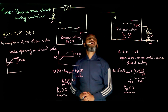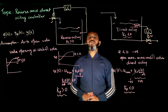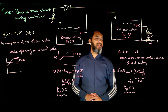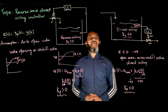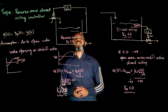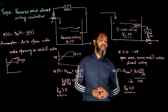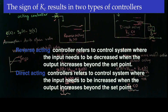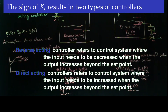In summary, when defining reverse and direct acting controllers, consider the sign of KC or KP. A reverse acting controller refers to a control system where the input needs to be decreased when the output increases beyond the set point, and KC is greater than zero. A direct acting controller refers to a control system where the input needs to be increased when the output increases beyond the set point, and KC is less than zero.